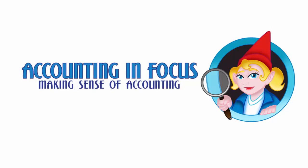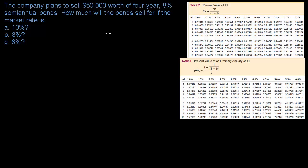Welcome to Accounting in Focus. In this video we're going to run through the calculations — so how do you actually finish up this problem? The company plans to sell $50,000 worth of four-year 8% semiannual bonds, and the question is how much will these bonds sell for if the market rate is 10%, 8%, or 6%. When I ask what the bonds will sell for, that's the same thing as asking for the issue price.